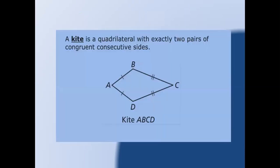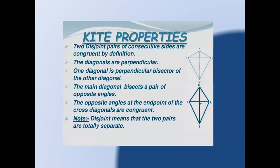Last we have a kite. A kite is a quadrilateral with exactly two pairs of congruent consecutive sides. In kite ABCD, AB equals AD, and BC equals CD. The properties of kites are: two disjoint pairs of consecutive sides are congruent, the diagonals are perpendicular, one diagonal is the perpendicular bisector of the other diagonal, the main diagonal bisects a pair of opposite angles, and the opposite angles at the endpoints of the cross diagonal are congruent.